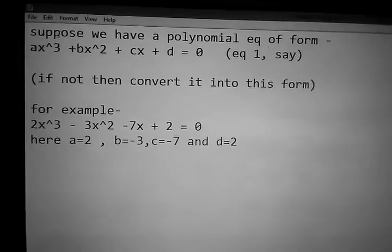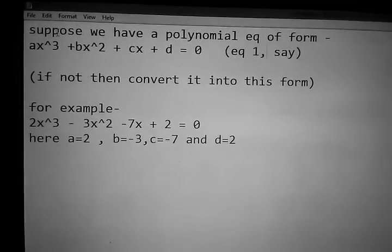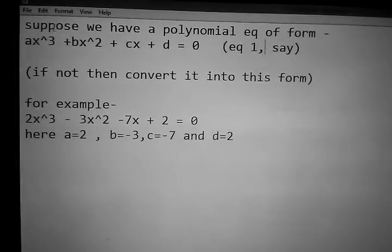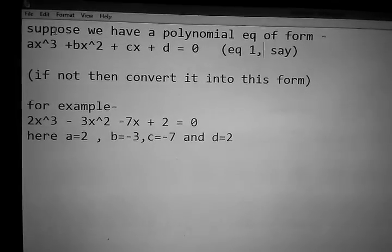For example, let's have equation 2x³ - 3x² - 7x + 2 = 0. This is a third degree polynomial equation as the highest power of x is 3 here.